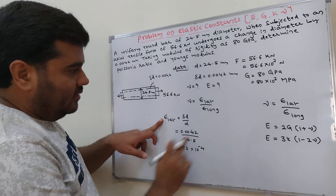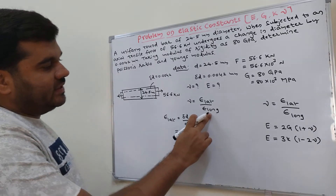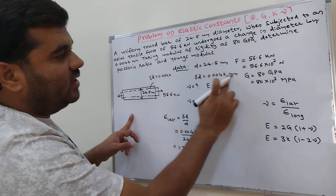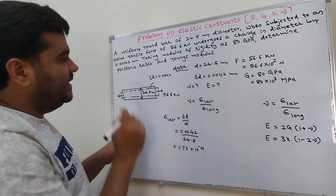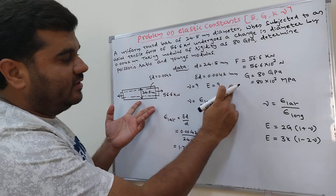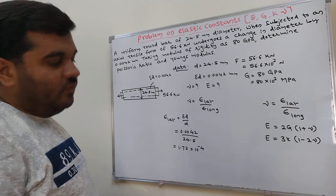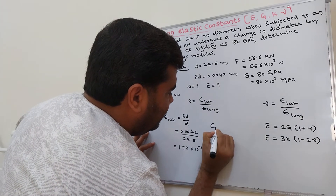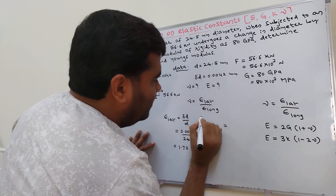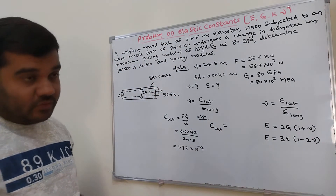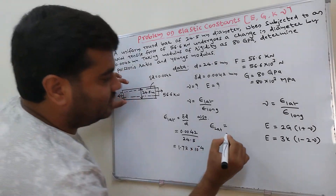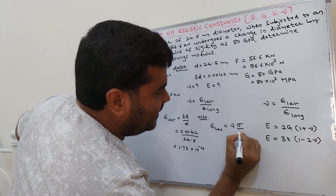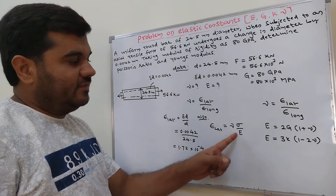For longitudinal strain, we need change in length divided by original length. But original length is not given, and change in length is also not given. So we cannot find longitudinal strain directly. However, we have one more formula: lateral strain also equals nu into stress divided by E.